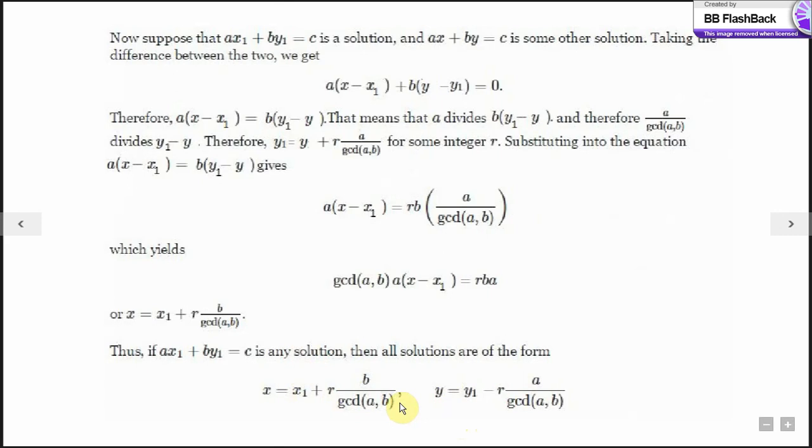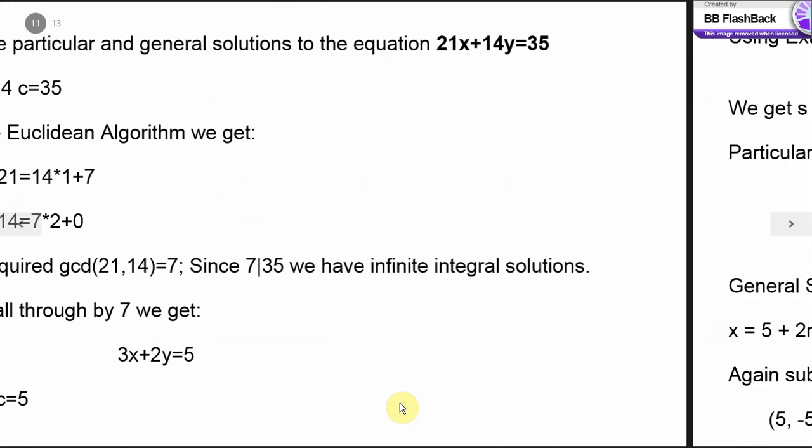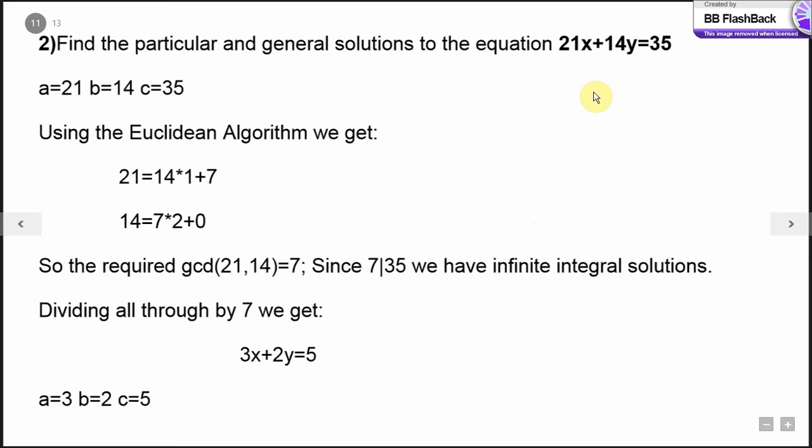Let's look at two examples. I'll start with the example which we have in our textbook. 21x plus 14y equals 35. In this equation, we have a equals 21, b equals 14 and c as 35. Using the Euclidean algorithm or any other suitable method, we get the required gcd as 7. 7 divides 35, so this equation has infinite integral solutions. Now divide this equation, the original one, by 7 to get 3x plus 2y equals 5.